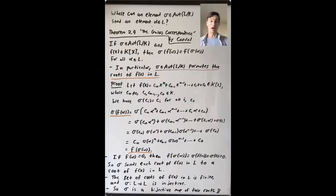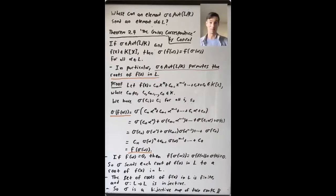We saw that an automorphism of Q(∛2) fixing Q was determined by where it sent the one special element ∛2. And we saw that it had to send that element to some element in Q(∛2) where you cube it and you get 2.